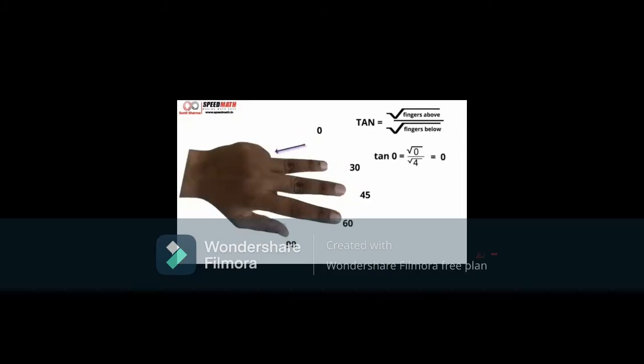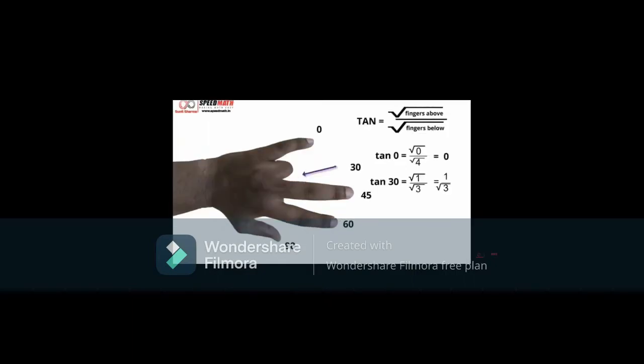So if you want to find tan 0, first count the numbers above the little finger and then below the little finger. We can see that there are no fingers above little finger and there are 4 fingers below little finger. Now the value of tan 0 is equal to root of 0 by root of 4, that is 0. Now let's find tan of 30. We can see that above ring finger, there is 1 finger and below there are 3. By formula, tan 30 will be root of 1 by root of 3, that is equal to 1 by root 3.